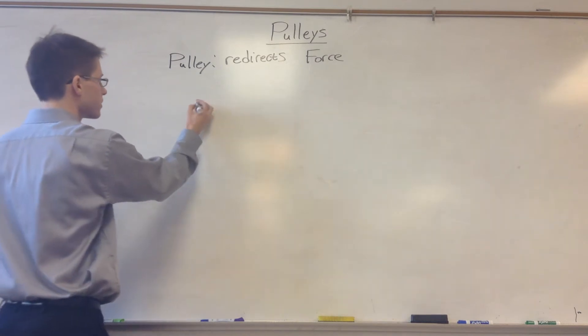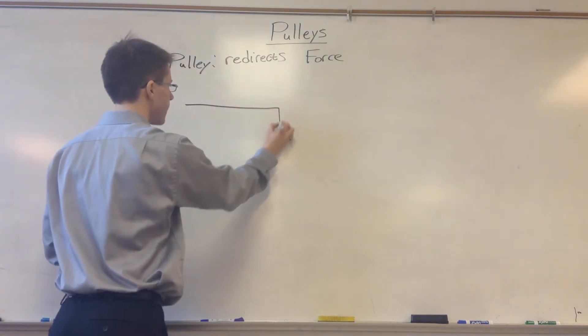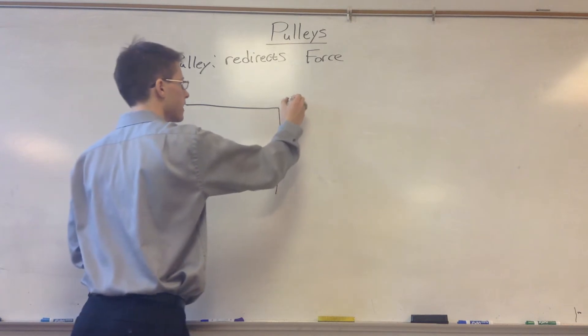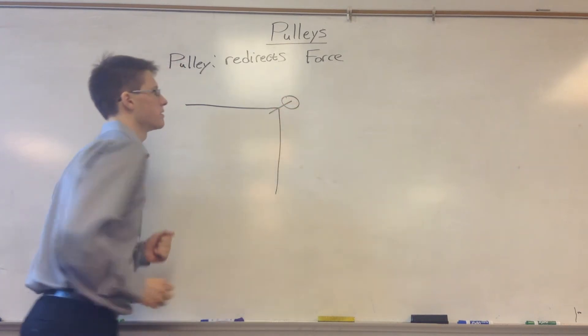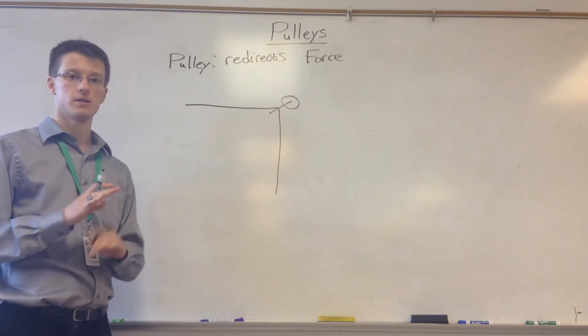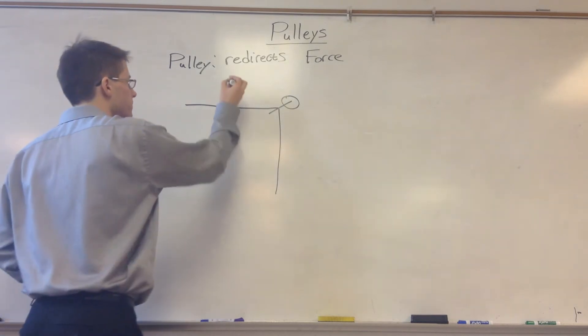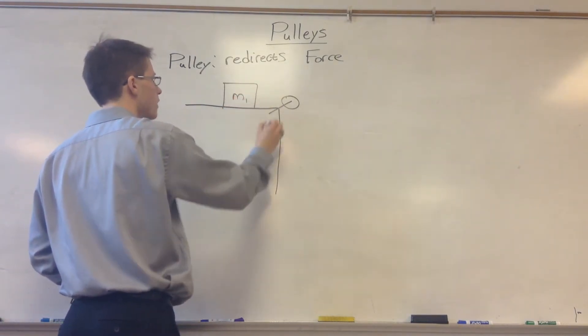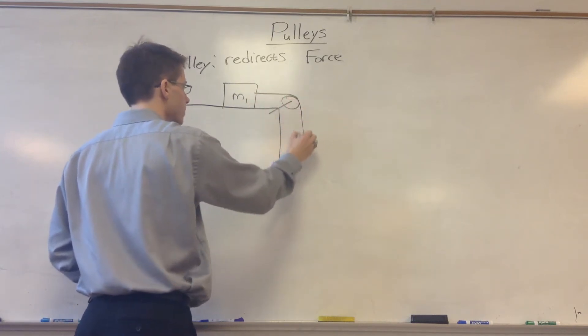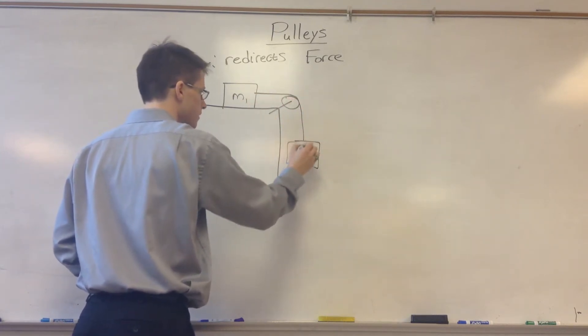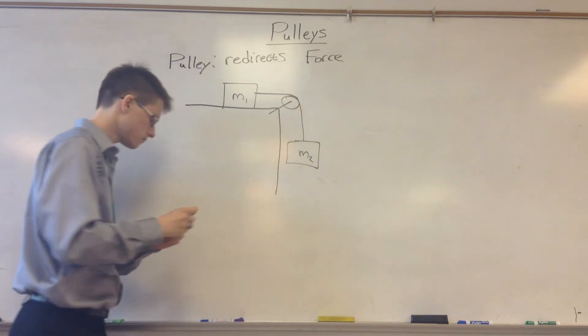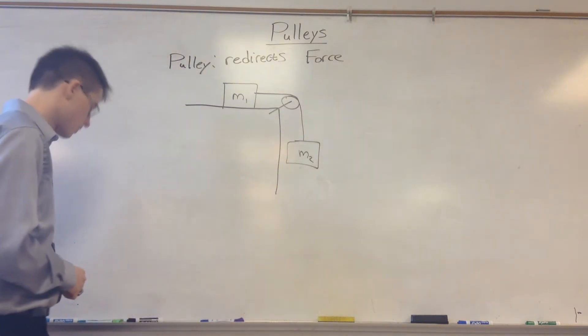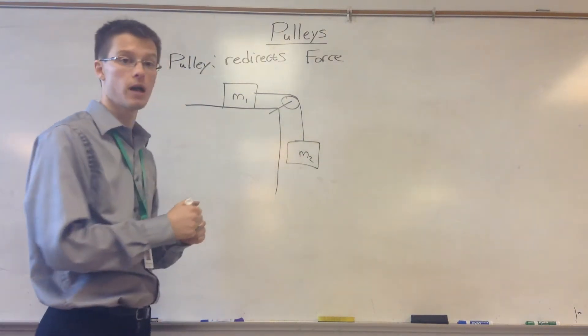A pretty classic example is if we have a table and we have a pulley right here, and in these problems we're assuming that pulleys are massless and frictionless. We're going to place a block right here of mass M1, and we're going to tie it over this pulley, and there's another block hanging of mass M2. So those are our two blocks attached by a pulley.